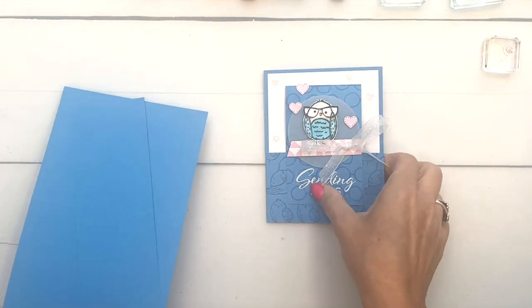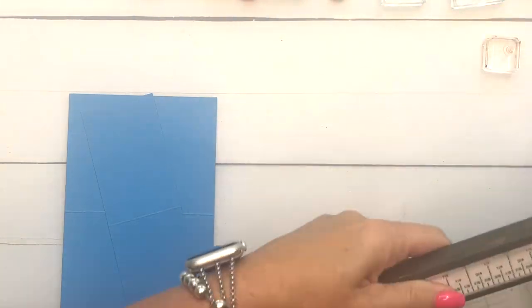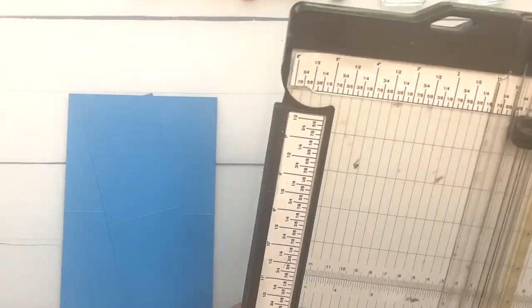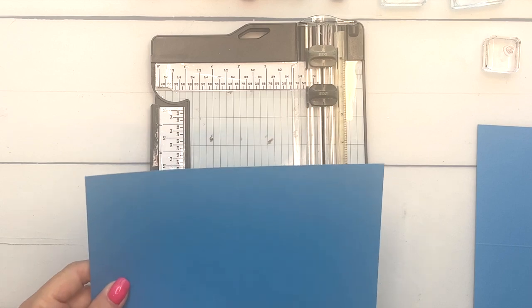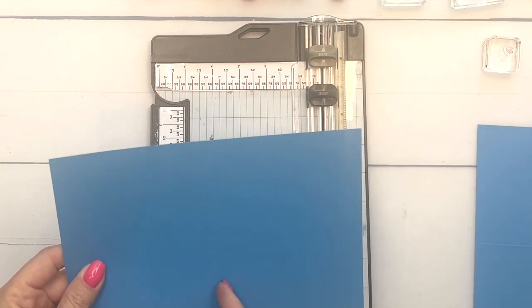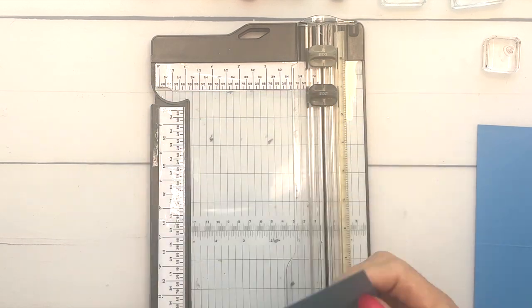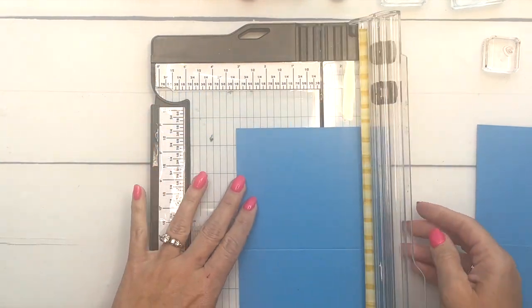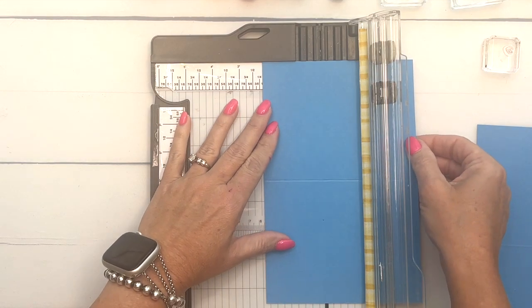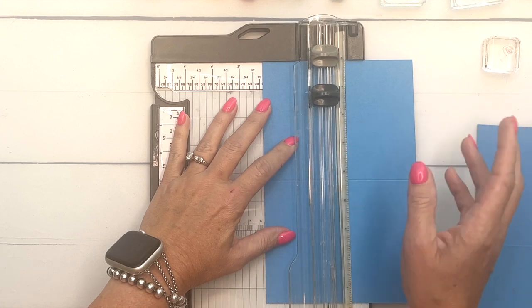Let's make our card base first. I have Tahitian Tide, a lovely new color from Stampin' Up. I've taken a half sheet of cardstock, 5.5 by 8.5 inches, and scored it at 4.25 inches. Now I'm going to put it in and cut this in half. I'm going to aim for about 2 and 1/8 inches.